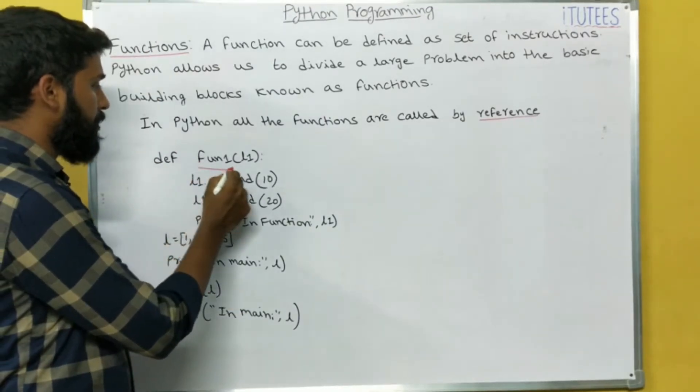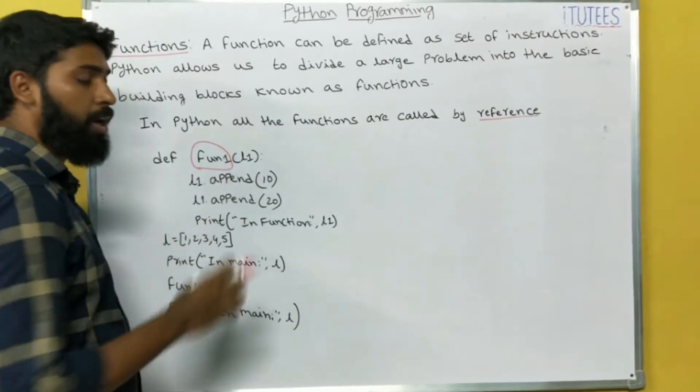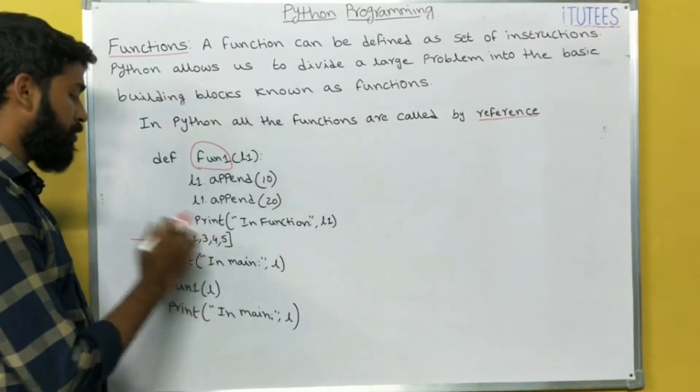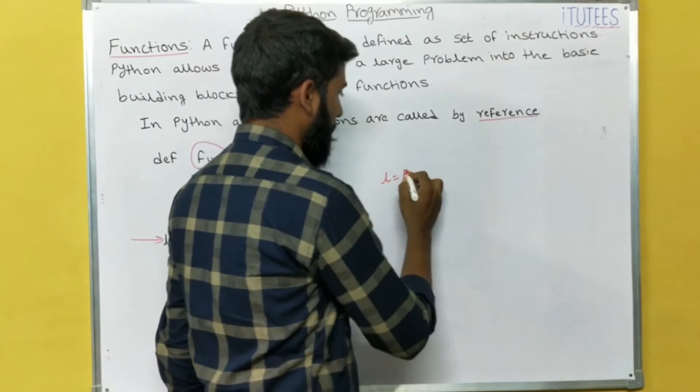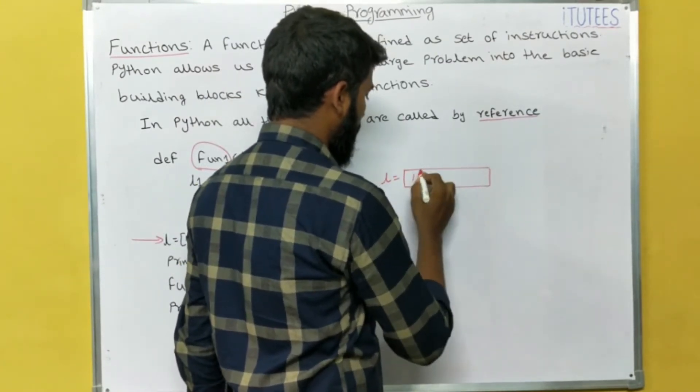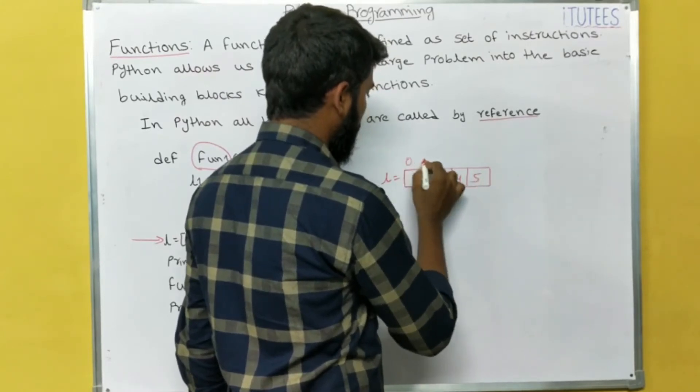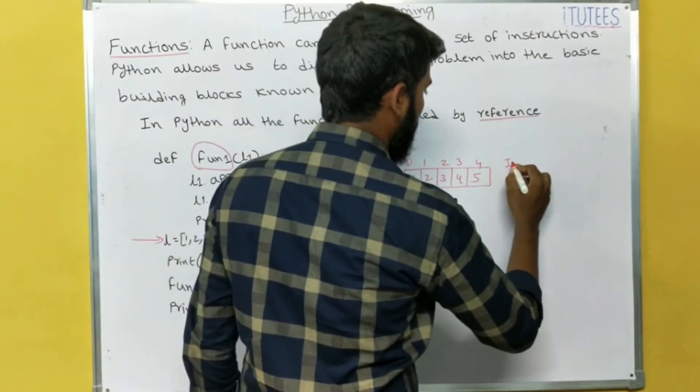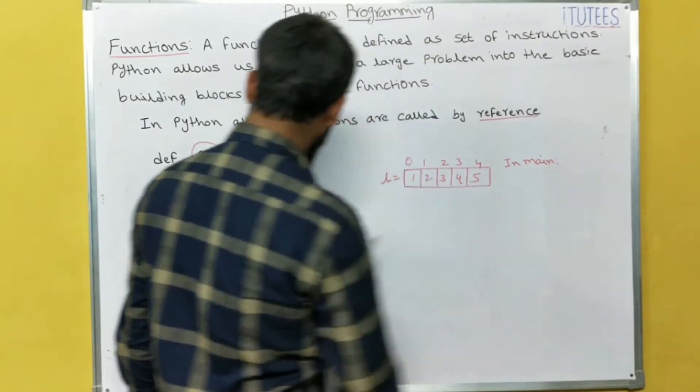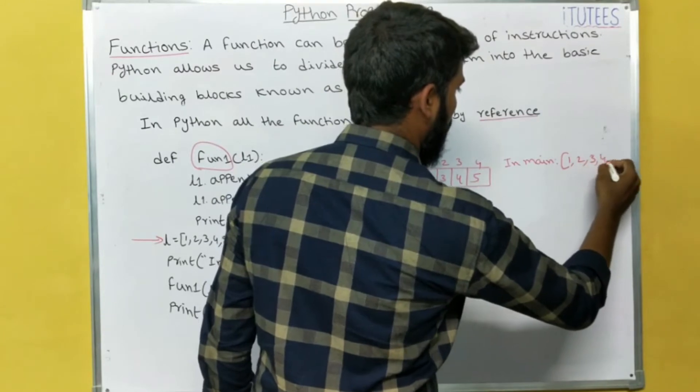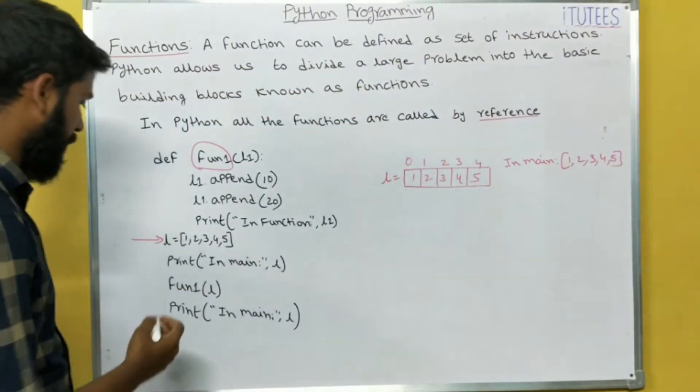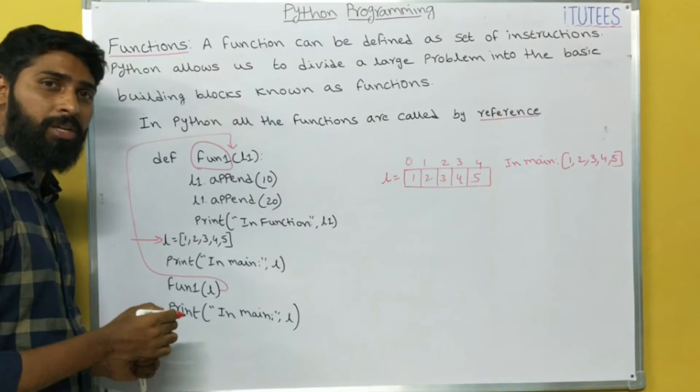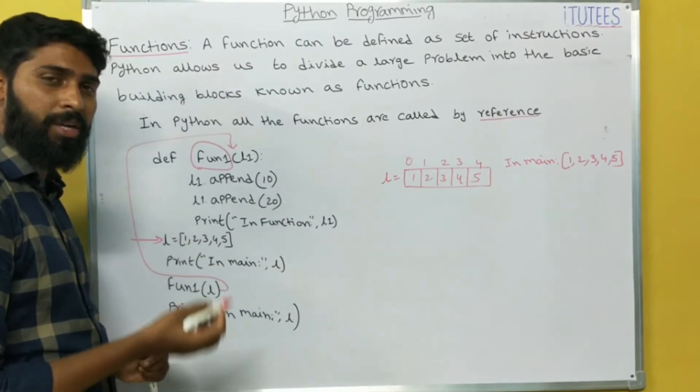So I am defining a function. The function name is function1 and it takes one argument list L1. So this is the starting point of execution. This is the first instruction. L equals to 1, 2, 3, 4, 5. These are the indexes. Print in main, that means it prints in main. So what is the L? L equals to 1, 2, 3, 4, 5.